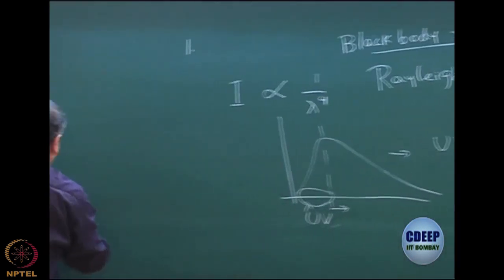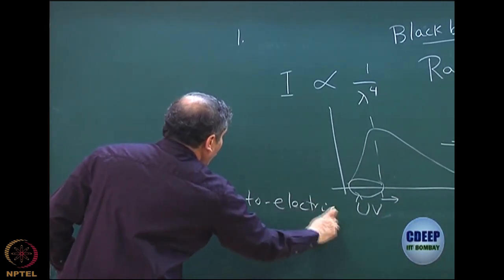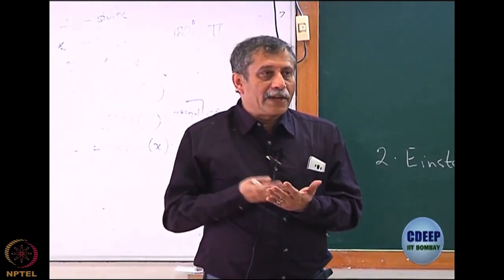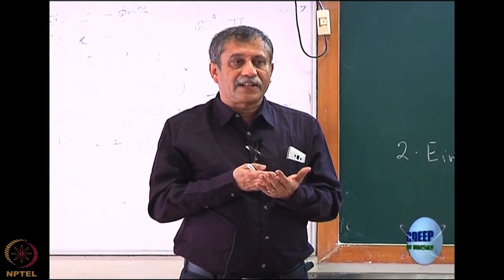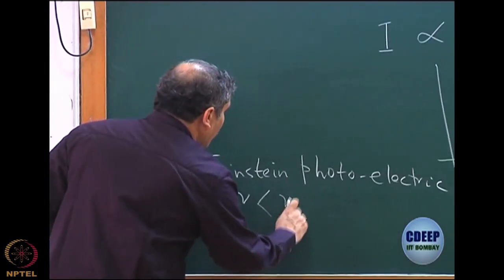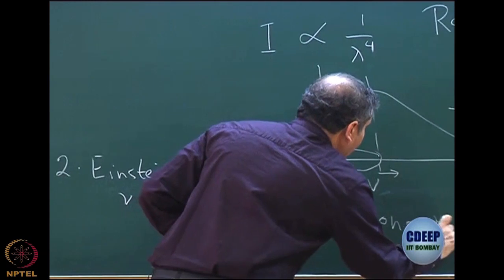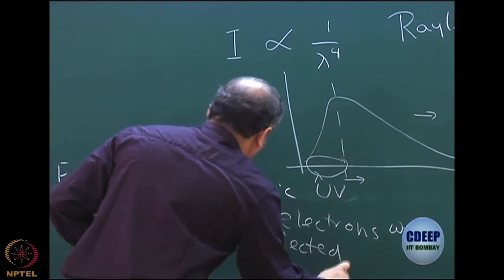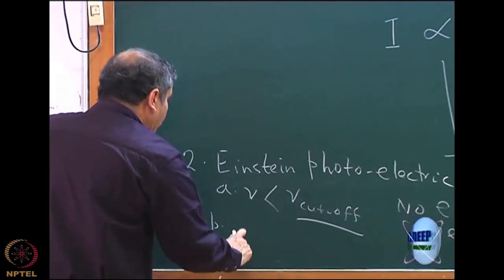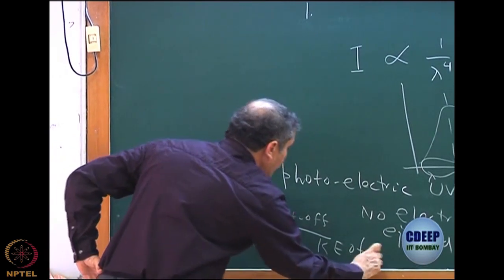The second famous experiment was Einstein's photoelectric effect. The photoelectric experiment essentially shines light on a metal of certain frequency and intensity, and you expect that the energy given to the metal would be sufficient at some point to eject electrons. What was interesting is that if the frequency ν is less than some cutoff frequency, no electrons are ejected, and this cutoff frequency depends on the metal.